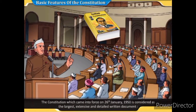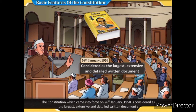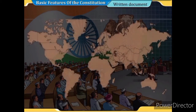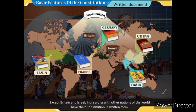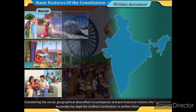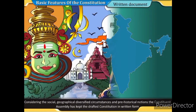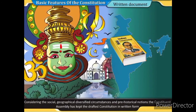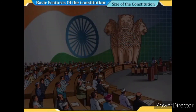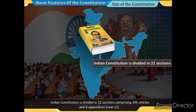The Constitution that came into force on 26th January 1950 is considered the largest, extensive, and detailed written document. Except for Britain and Israel, India along with other nations has its constitution in written form. Considering the social, geographical, and diverse circumstances and pre-historical notions, the Constituent Assembly kept the drafted Constitution in written form. The Indian Constitution is divided into 22 sections comprising 395 articles.